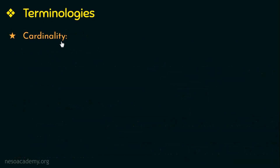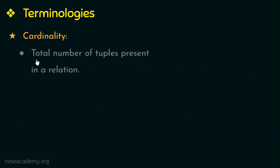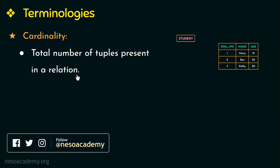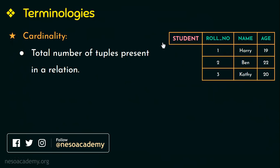Next, what is cardinality? Cardinality is the total number of tuples or rows present in a relation. Here I have taken a student relation with attributes role number, name, and age. The cardinality of this student relation is 3 because there are 3 rows or 3 tuples.